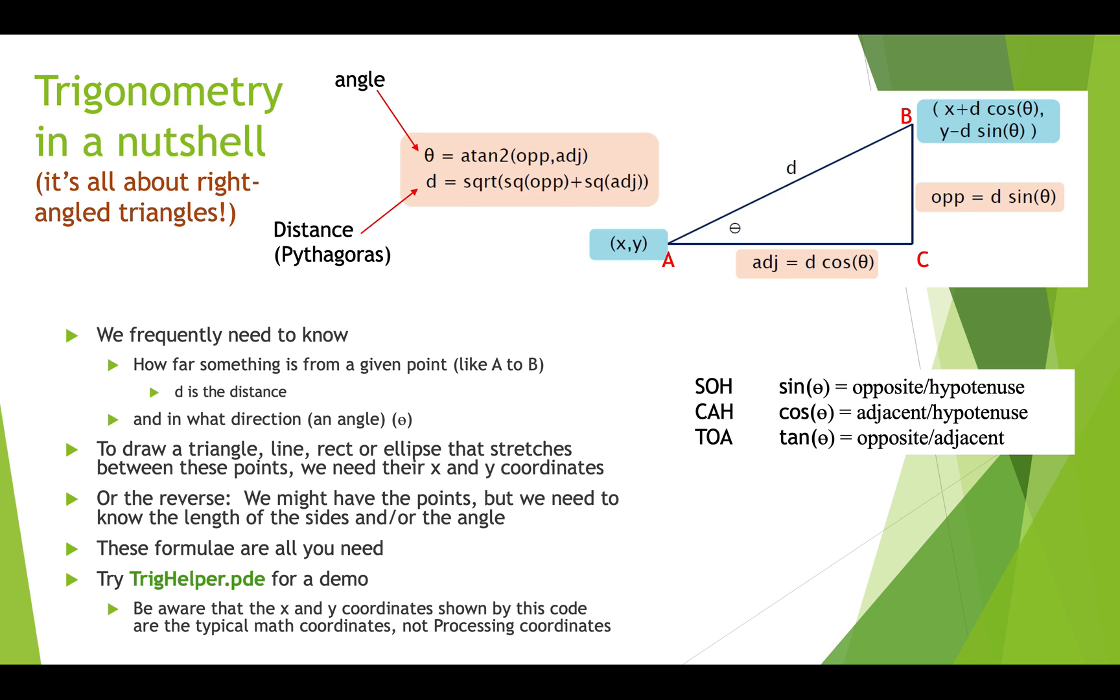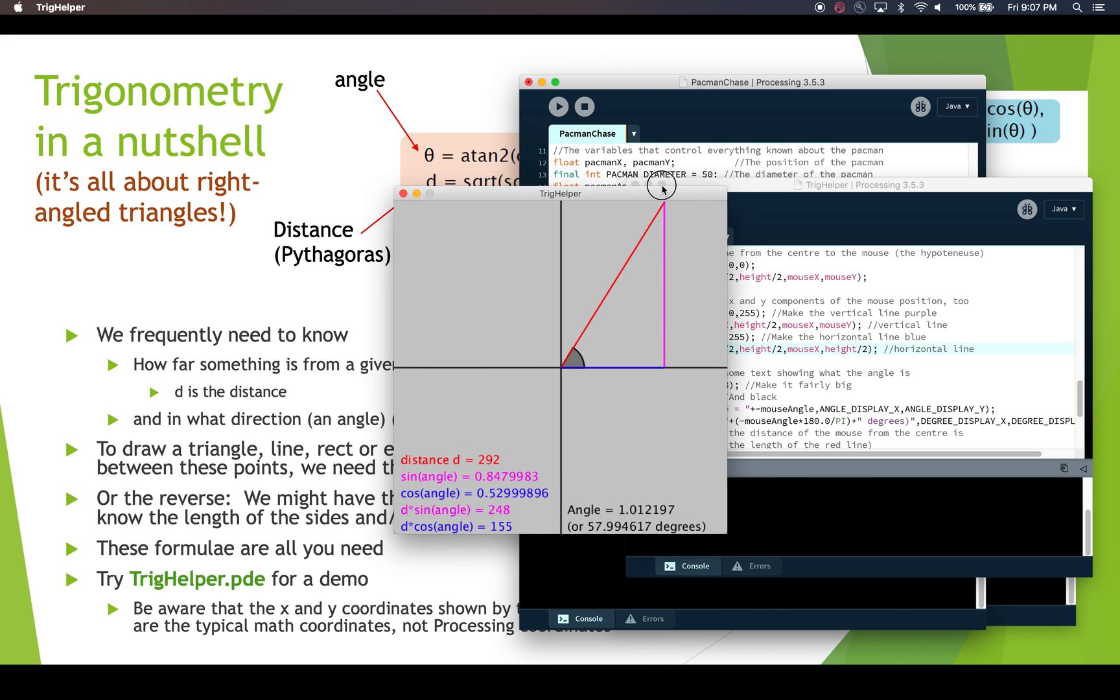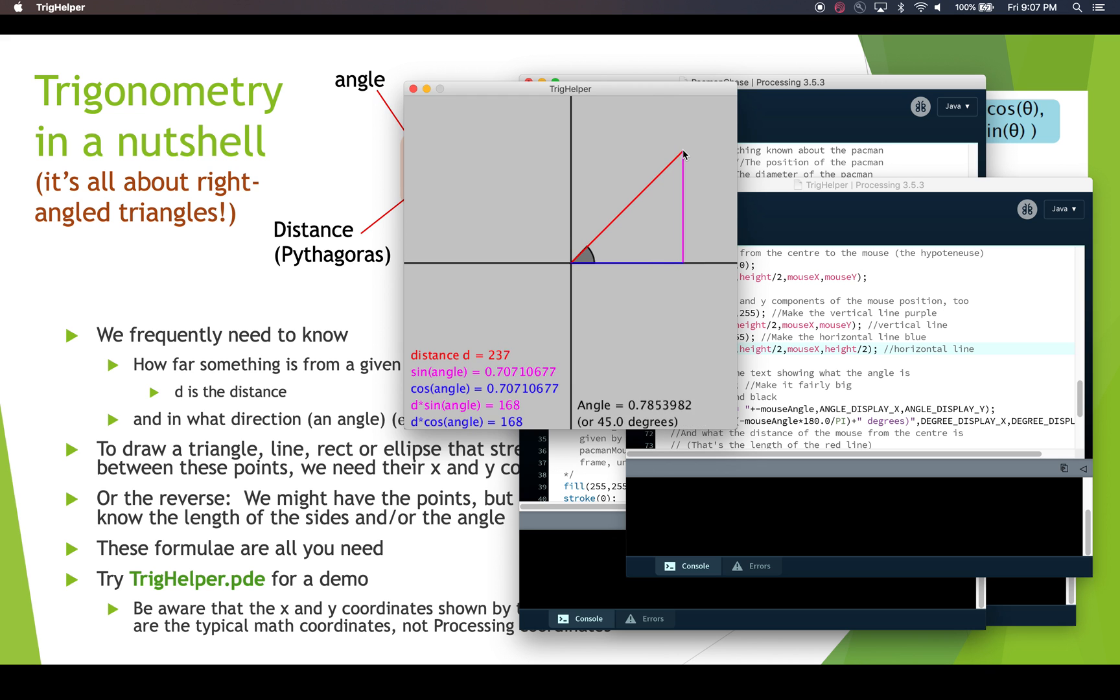In processing we have the Trig Helper demo. When looking at this demo, the X and Y coordinates shown are the regular math coordinates, not processing coordinates. Here's the Trig Helper. When we run this, we can move the mouse cursor around and we get a right angle triangle that drops or rises from where the cursor is up to the central x-axis.